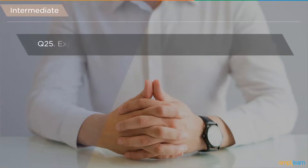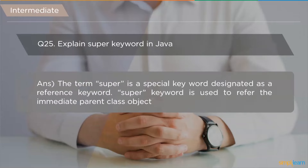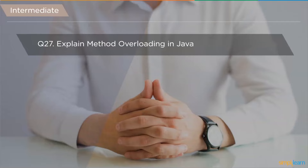The next question is: explain the 'super' keyword in Java. The term 'super' is a special keyword designated as a reference variable, similar to the 'this' keyword. However, the difference is that 'super' is used to refer to the immediate parent class object.